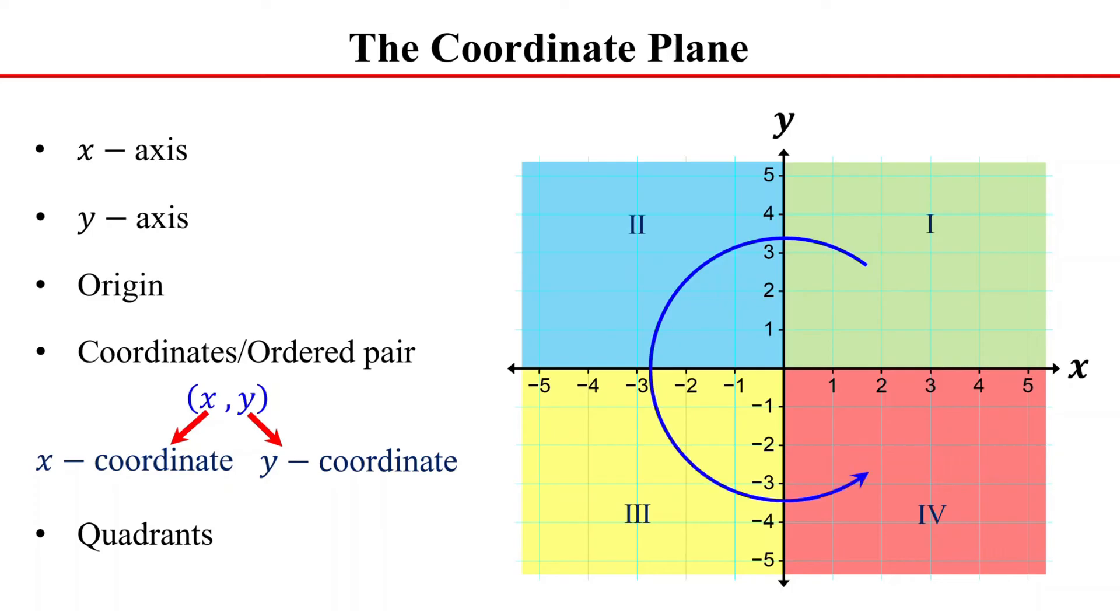Notice that the quadrants begin in the top right region and proceed counterclockwise. Quadrants are usually numbered with Roman numerals as shown on the coordinate plane.